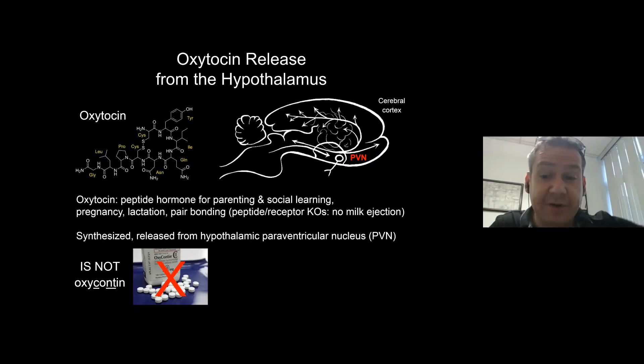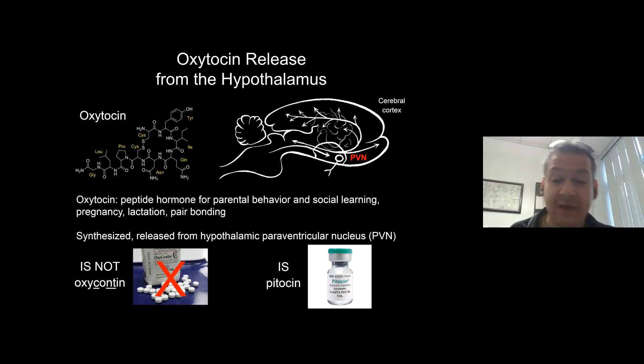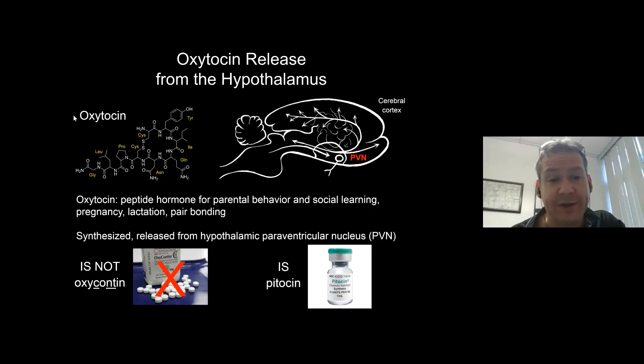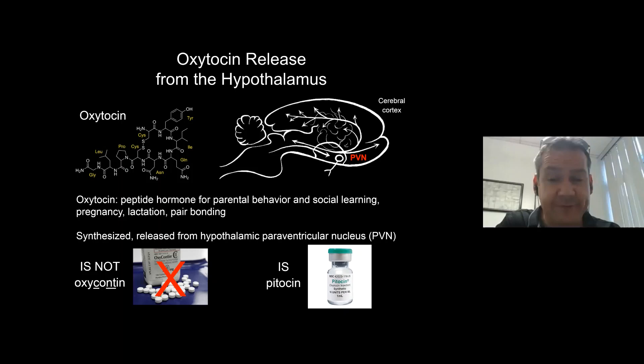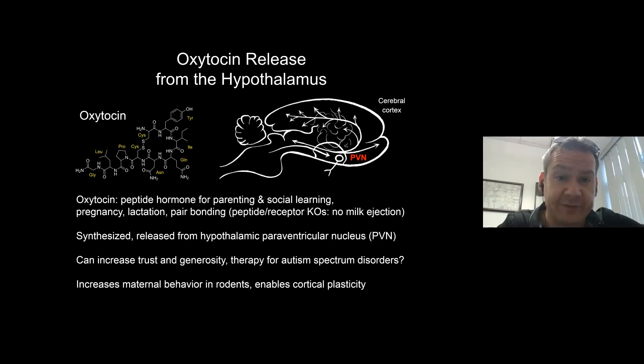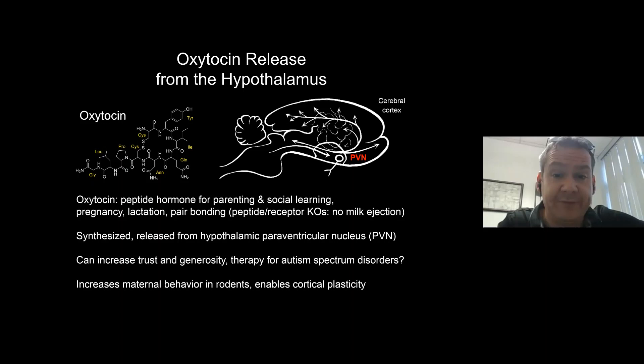To be clear, oxytocin is not oxycontin. Oxycontin is basically a low-grade form of morphine — a painkiller. Oxytocin is pitocin — the same nine amino acids — given during and after pregnancy for postpartum care. There is a growing literature giving oxytocin, often intranasally, to human subjects, with claims that it can increase pro-social behavior, trust, and generosity, even in people on the autism spectrum. We need to figure out how oxytocin is acting in the brain to eventually provide therapeutic treatment.